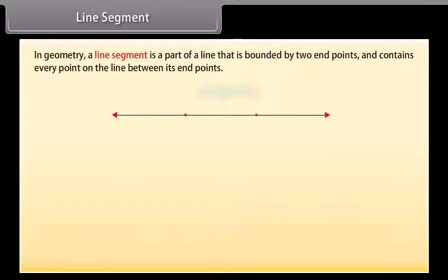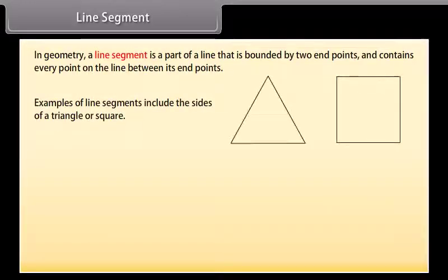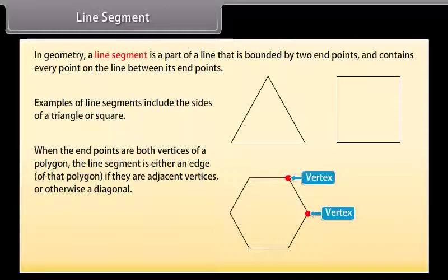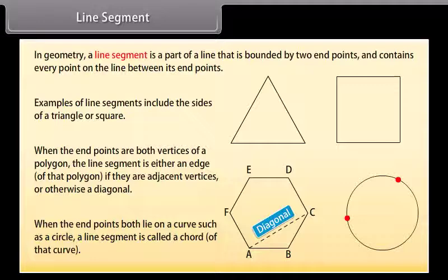In geometry, a line segment is a part of a line that is bounded by two end points and contains every point on the line between its end points. Examples of line segments include the sides of a triangle or a square. More generally, when the end points are both vertices of a polygon, the line segment is either an edge of that polygon if they are adjacent vertices, or otherwise a diagonal. When the end points both lie on a curve such as a circle, a line segment is called a chord of that curve.